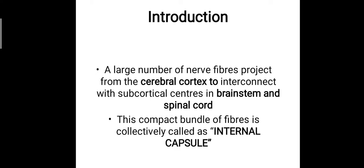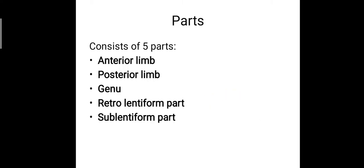From the gray matter, there are a lot of fibers which project into the subcortical centers in the brainstem and the spinal cord, and this compact bundle of nerve fibers is termed the internal capsule. It consists of five parts: the anterior limb, the posterior limb, the genu, the retrolentiform part, and the sublentiform part.